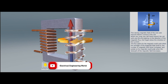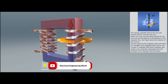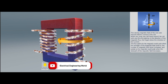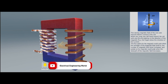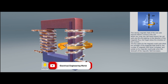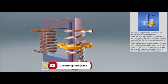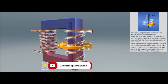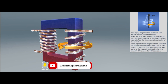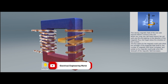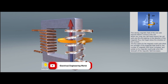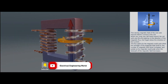The varying magnetic field of the iron core induces electric current in the secondary coil according to the left-hand grip rule. When you wrap your left hand around the coil with your thumb pointing in the direction of the magnetic flux, your fingers show the direction of the current in the coil.